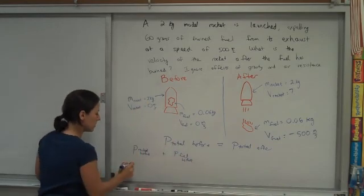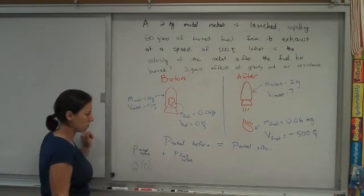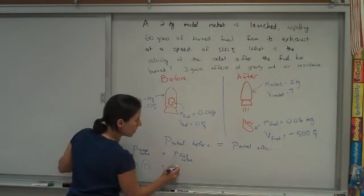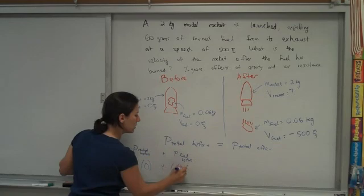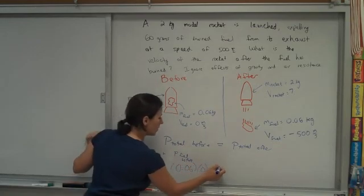And so for the rocket, mass times velocity. Its mass is 2. Its velocity is 0. For the fuel, mass times velocity. Its mass is 0.06. Its velocity is 0.